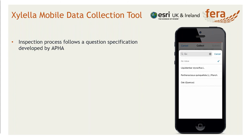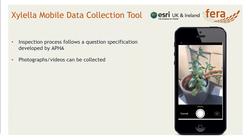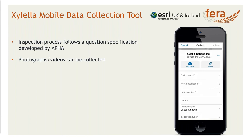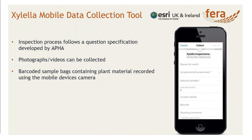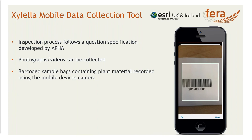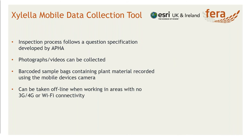It also asks for photos and videos to be collected, which is quite important. Although we are collecting the GPS location, the GPS accuracy on a mobile phone is probably plus or minus five metres at best. So having a photo of a plant and a photo of a plant in its surrounding environment is really good for repeat inspections. We also have a barcode field — part of the inspection process involves an inspector taking a plant sample and putting it into a sample bag that has a barcode attached. They can use the barcode reader to scan this in just to remove any transcription errors. Finally, the tool can be taken offline, used in areas where there's no 3G, 4G or Wi-Fi connectivity, and then synced back later on when you do have connectivity.